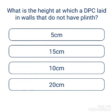Question: What is the height at which a DPC is laid in walls that do not have a plinth? Options: 5 cm, 15 cm, 10 cm, 20 cm. The answer is 15 cm.